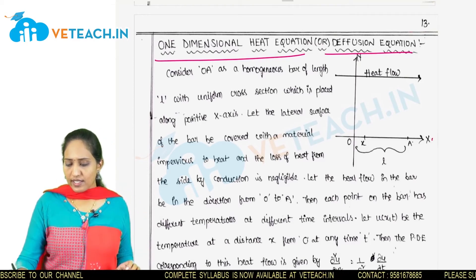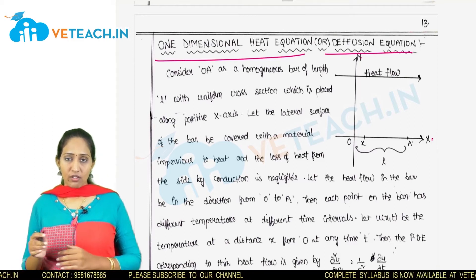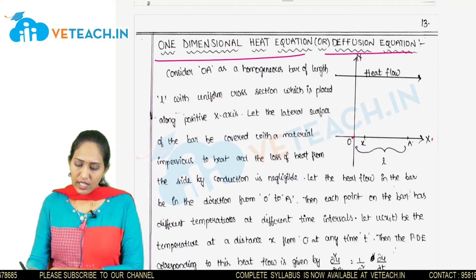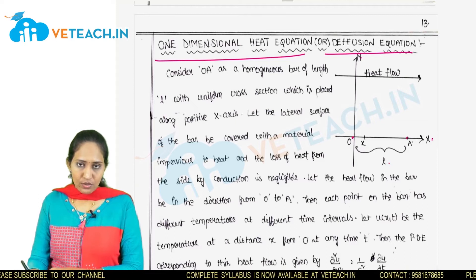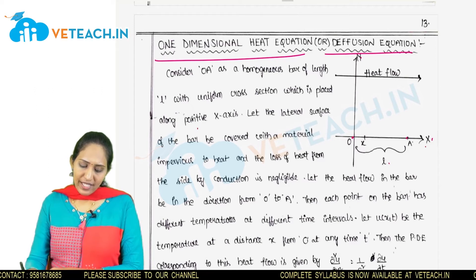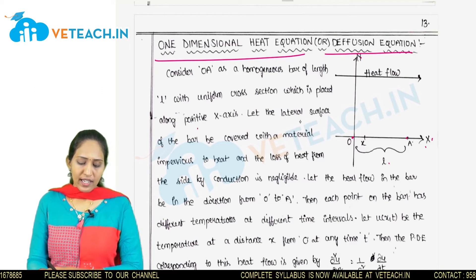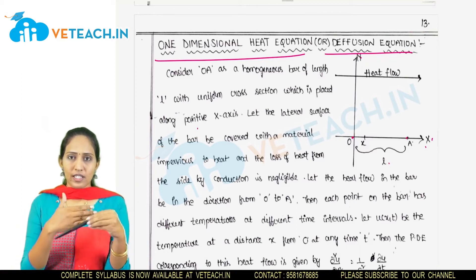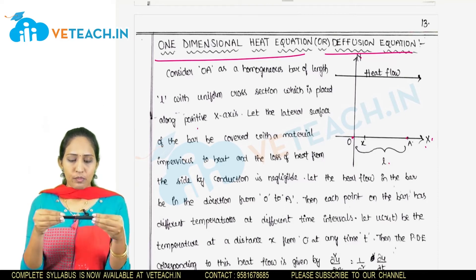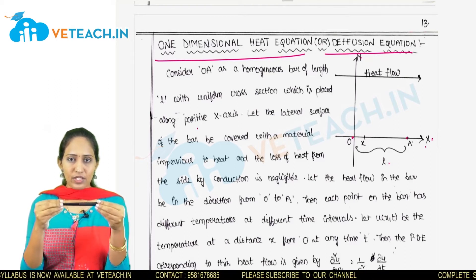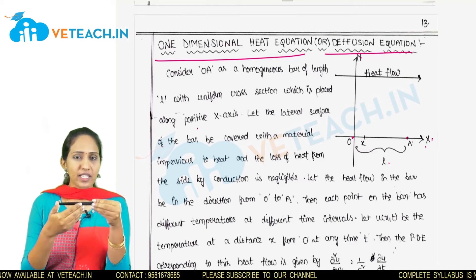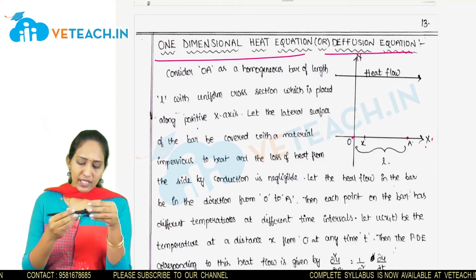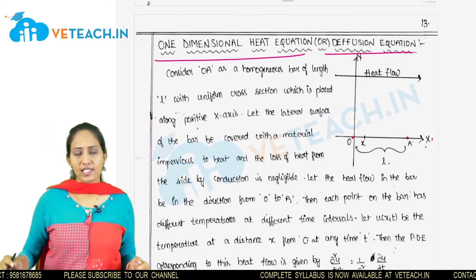Along the x-axis and y-axis, we are taking a rod or bar of a certain length — for example, you can consider this bar of length 1 inch. The lateral surface of the bar is covered with an insulating material, so we treat it as a one-dimensional problem. The cover ensures that no heat escapes through the sides.